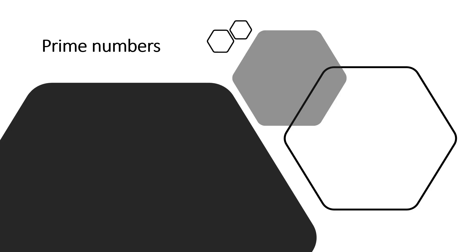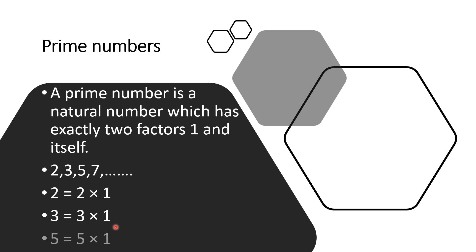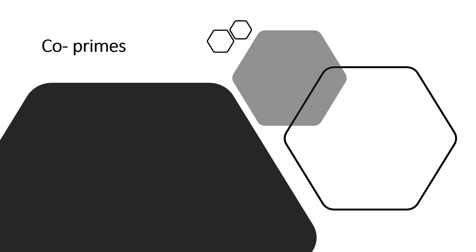A prime number is a natural number which has exactly two factors: 1 and itself, like 2, 3, 5, 7, etc. The factors of 2 are 1 and 2 only; factors of 3 are 1 and 3 only; factors of 5 are 1 and 5 only. Therefore 2, 3, 5, and so on are prime numbers. Here we need to understand co-prime very well.